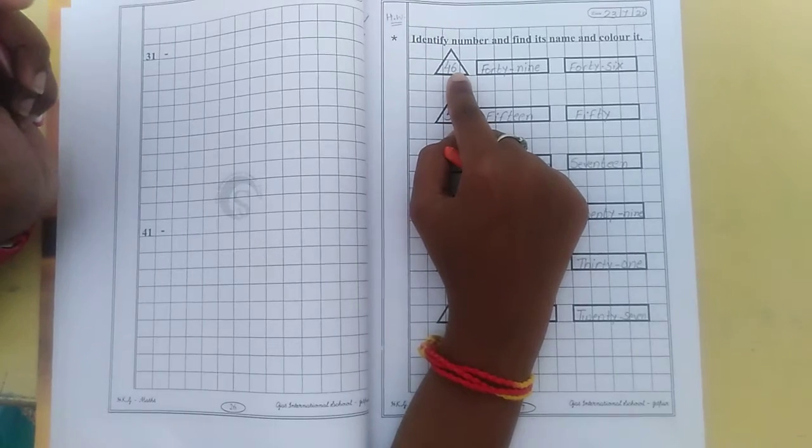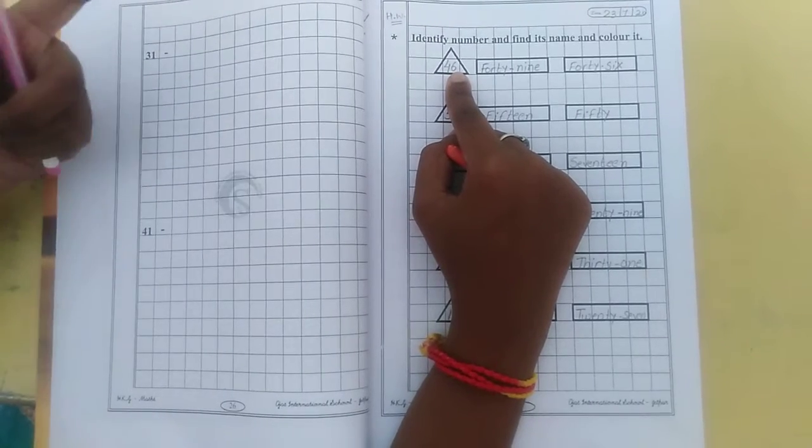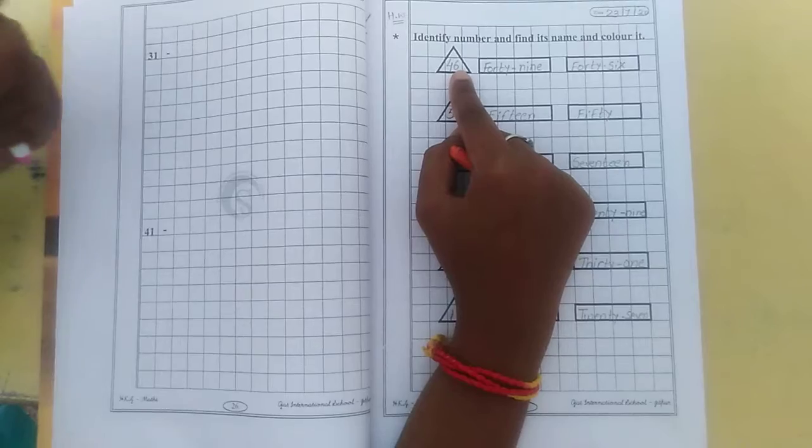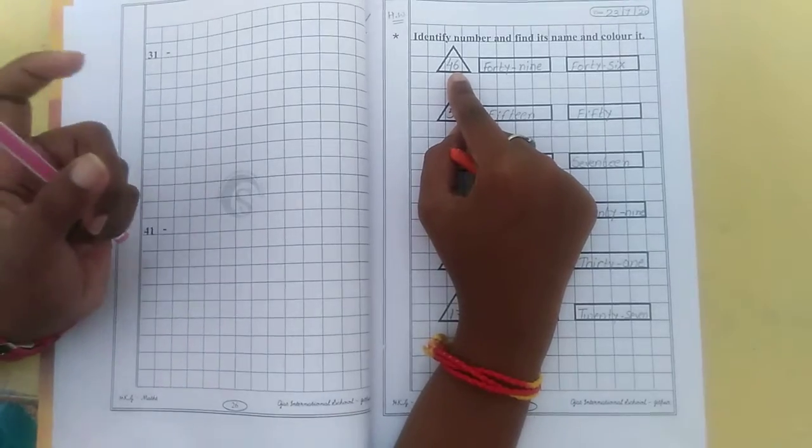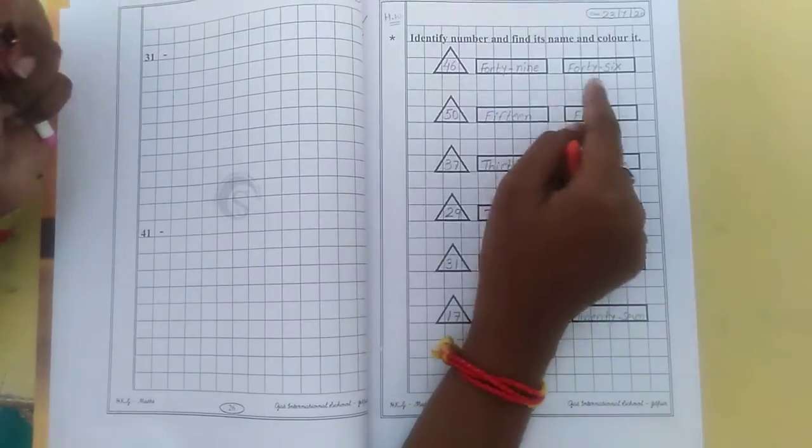So let us read first number, number 46. So what is the spelling of 46? F-O-R-T-Y 40 and S-I-X 6. So let us find the number name 46.